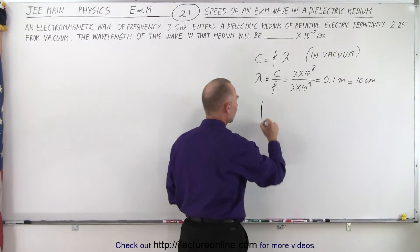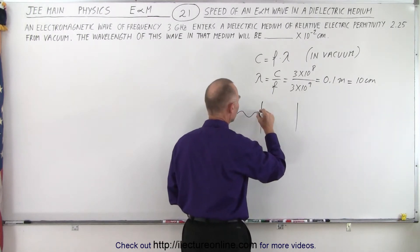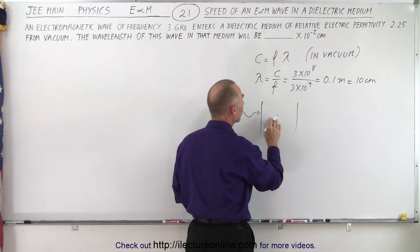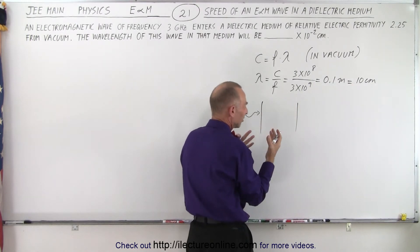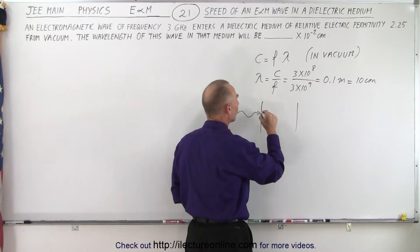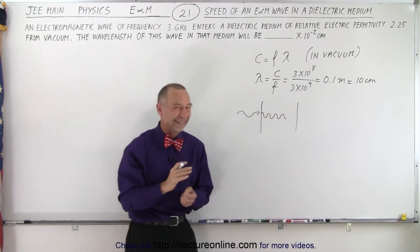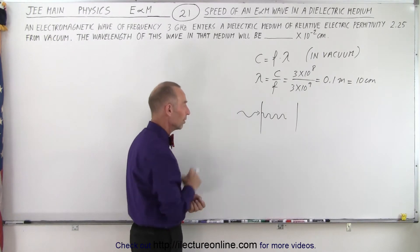Now if the wave enters into a medium that's a dielectric, we know that the wave will essentially slow down, the speed will decrease and the wavelengths will become shorter. So we're looking for an answer that will be less than 10 centimeters once we're in a medium.